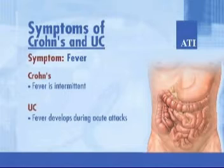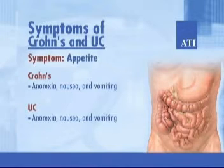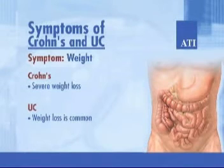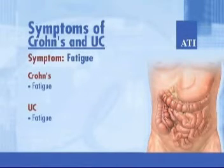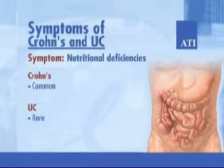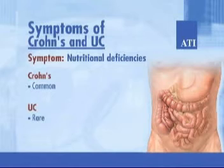Fever: with Crohn's, fever is intermittent; with UC, fever develops during acute attacks. Appetite: with both, anorexia, nausea and vomiting. Weight: with Crohn's, severe weight loss; with UC, weight loss is common. Fatigue: present with both. Tenesmus: with Crohn's it is rare; with UC it is severe. Nutritional deficiencies: with Crohn's they are common; with UC they are rare.